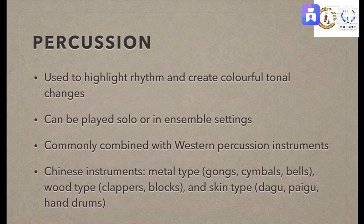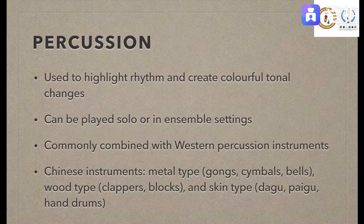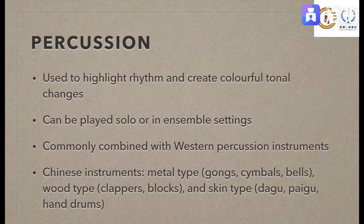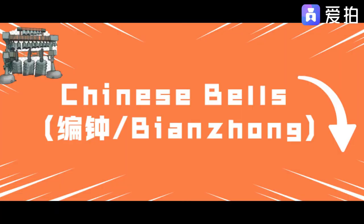Percussion are traditionally used to highlight the rhythm and create colorful tonal changes in the music. They can be played solo or in ensemble settings, and are commonly combined with western percussion instruments. Chinese instruments include the metal type like gongs, cymbals, and bells; the wood type like clappers and blocks; and the skin type like the dagu, paigu, and hand drums.